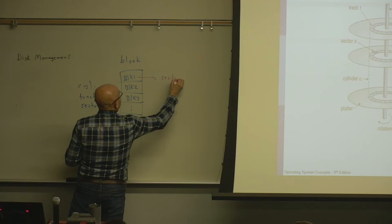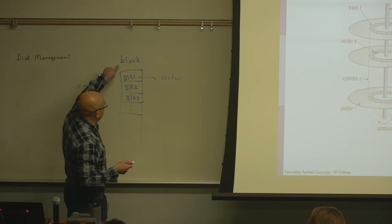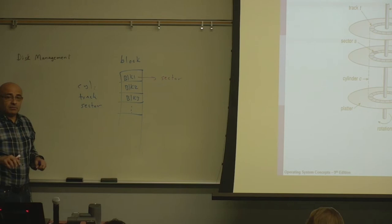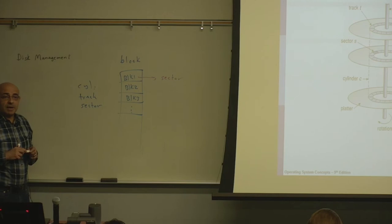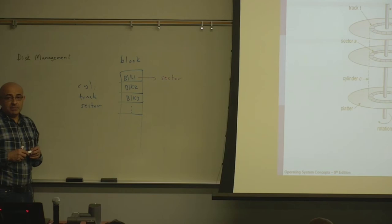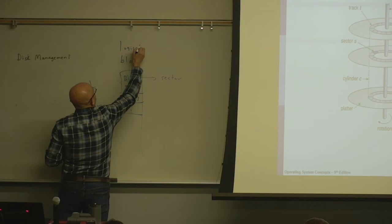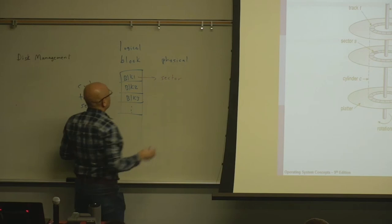Files will be divided into blocks — block one, block two, block three — and each block will get mapped to a sector. If we draw an analogy with virtual memory: in virtual memory management, we map pages into frames. The page is the logical unit and the frame is the physical unit. In disk management, the logical unit is the block, and logical blocks get mapped into physical sectors on disk.